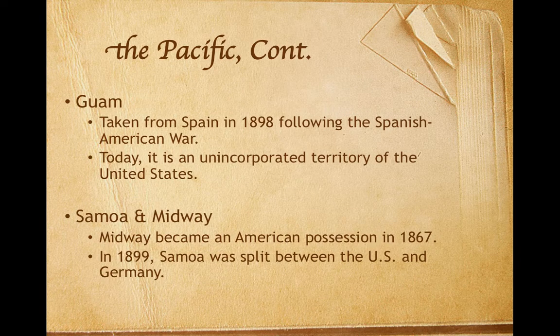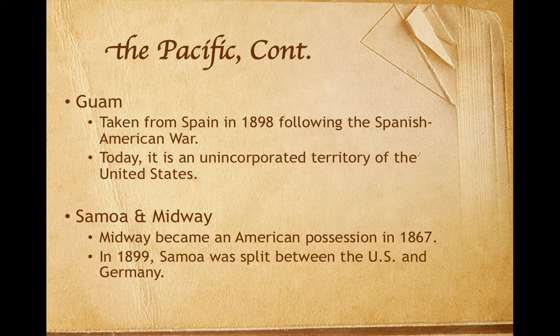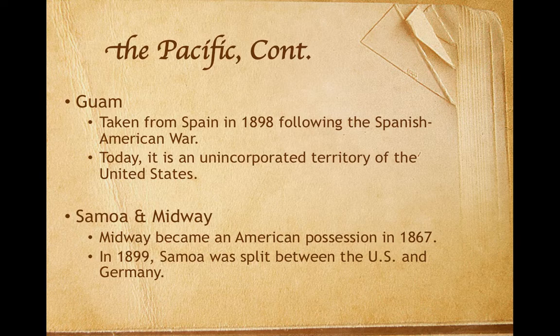A couple of other Pacific islands to mention. Guam was an important port of call for Spanish ships crossing the Pacific from Mexico to the Philippines. Following the Spanish-American War in 1898, Guam was taken from Spain by the United States. Today it is an unincorporated territory of the U.S. Midway had become an American possession in 1867, even before the Spanish-American War. In 1899, following the Spanish-American War, Samoa was divided between Germany and the United States. These Pacific islands provided valuable naval bases and refueling stations for American ships traveling to Asia.